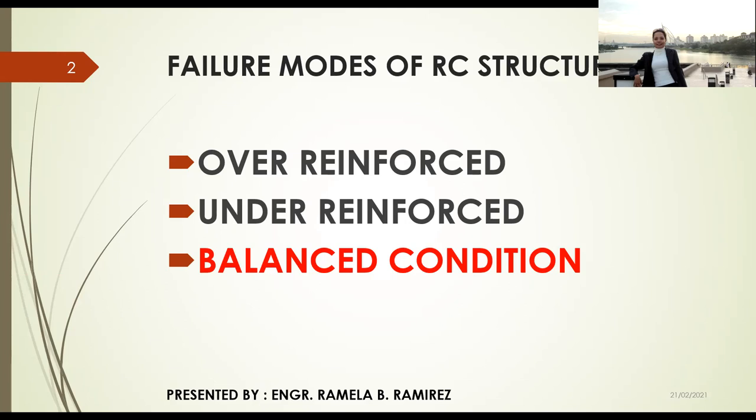The last condition is the balanced condition. The balanced condition is when the beam has a moderate percentage of steel, which is usually between minimum and maximum values followed by the code. The failure mode is initiated by yielding of steel while the strains in the concrete are relatively low. Beams of this type can undergo large deflections before final collapse will occur.